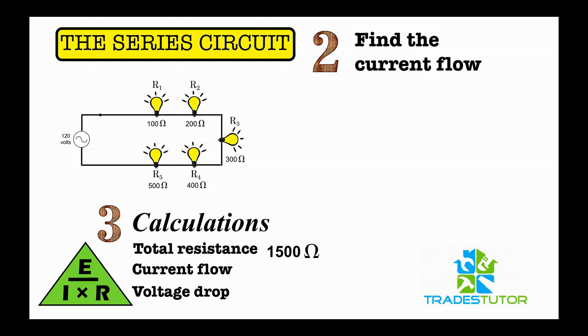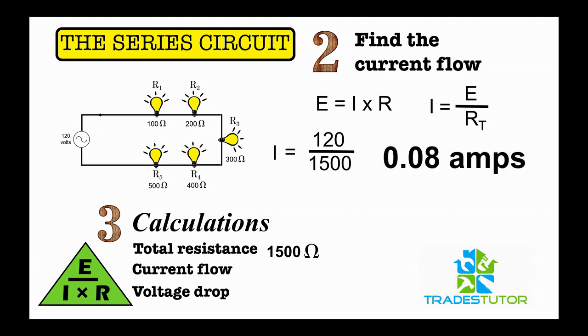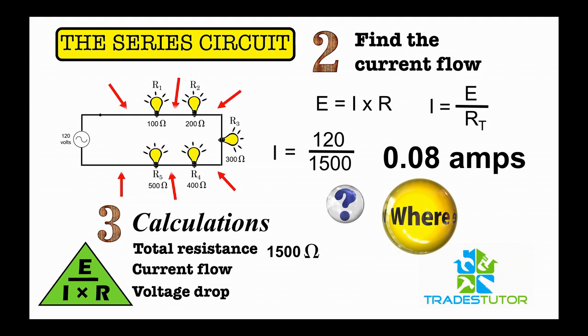Second thing, find the current flow. For this, we're going to use Ohm's Law. So E equals I times R, but we're solving for current or the I, so we have to rearrange the formula, plug the numbers in, and what we find is it's 0.08 amps. Now the question becomes, where is it 0.08 amps? Well, the answer: everywhere. There's one path for the current to flow, and it's the same current going everywhere in the circuit. Kind of like a hose or a water system. One drop goes in, one drop comes out. Same with electricity. All right. So we've calculated our amps, 0.08.